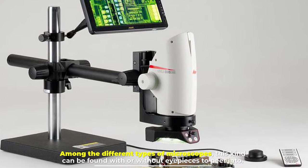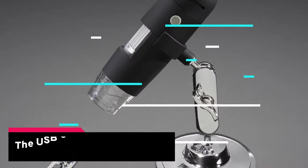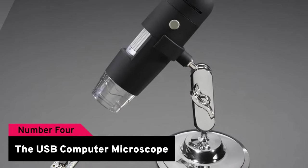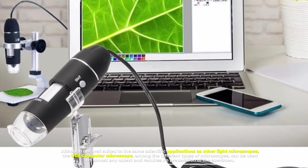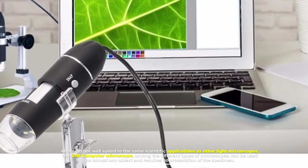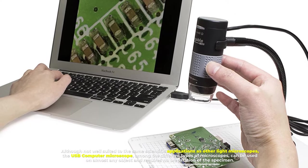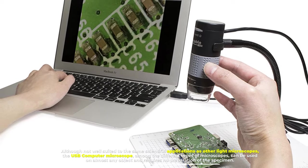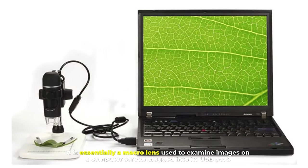Number four: the USB computer microscope. Although not well suited to the same scientific applications as other light microscopes, the USB computer microscope can be used on almost any object and requires no preparation of the specimen. It is essentially a macro lens used to examine images on a computer screen, plugged into a USB port.